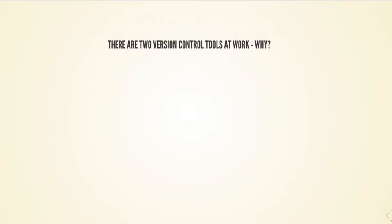The question you might have asked yourself is: why are there two version control tools at work? The reason is that one is not enough when handling large files. Git is the industry and science standard for version controlling, but it does not handle large files well.